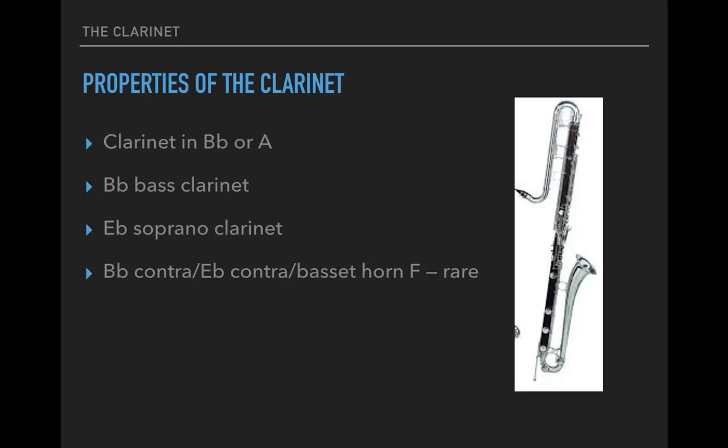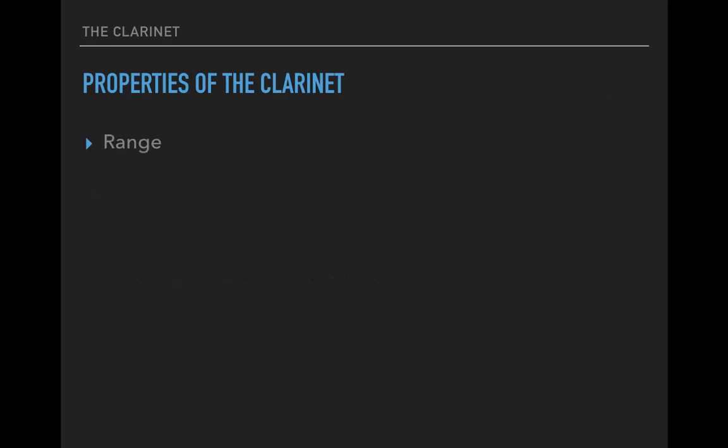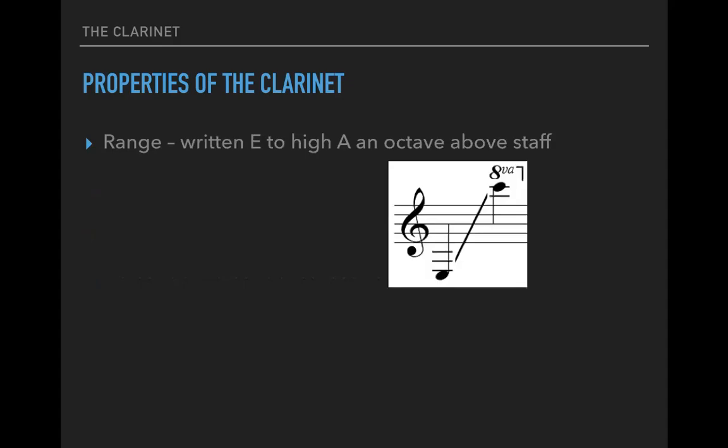We'll see some more specifics about range and the clarinet shortly. The low note of the clarinet is something to memorize — especially the written low note, which is a low E. The resulting pitch for a B-flat instrument would be a major second below. The resulting pitch for the A clarinet — you guessed it — is a minor third lower than that, meaning the resulting pitch is C-sharp.